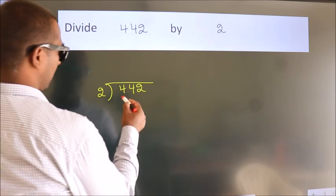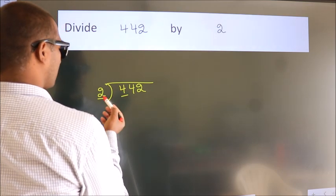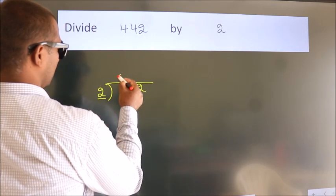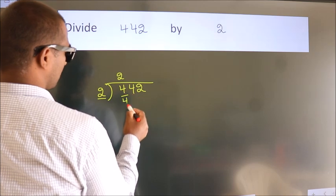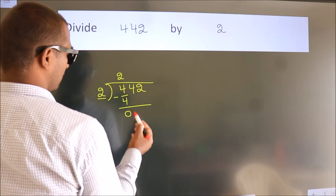Next, here we have 4, here 2. When do we get 4? In the 2 table, 2 times 2 is 4. Now we subtract and we get 0.